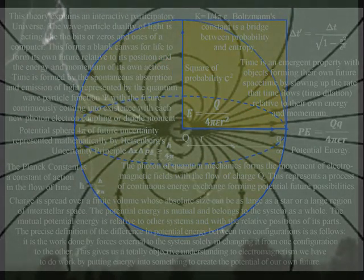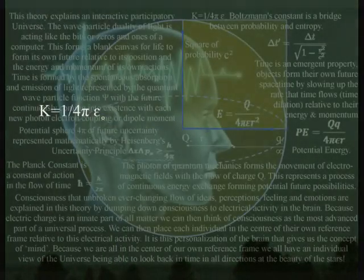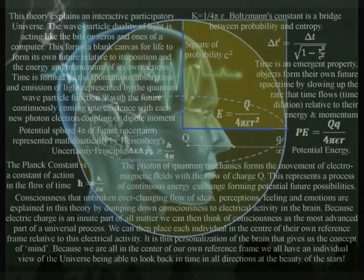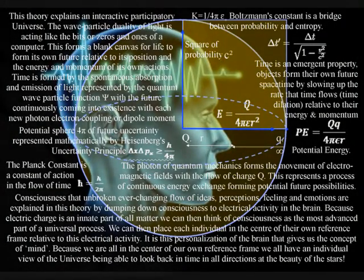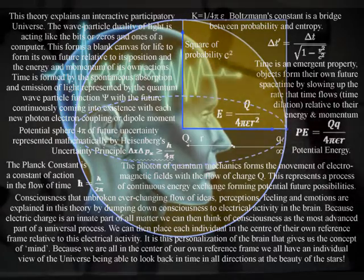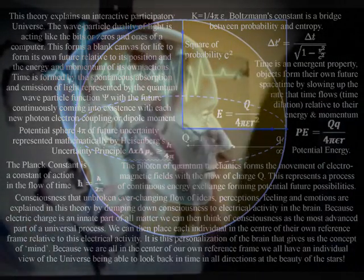In this theory, electrical potential and the individual's future potential are the same within their own reference frame. The most advanced part of this universal process is in the form of electrical activity in the brain, being able to comprehend and measure this process as the flow of time with a past and uncertain future.